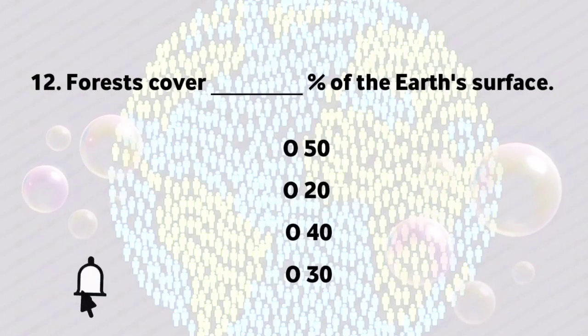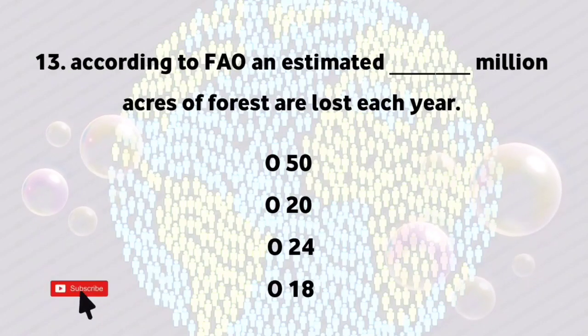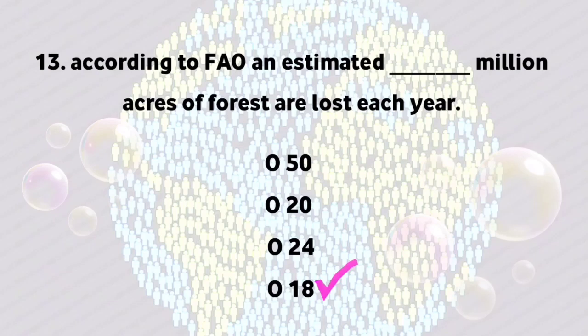Forests cover 30% of the Earth's surface. According to FAO, an estimated 18 million acres of forests are lost each year.